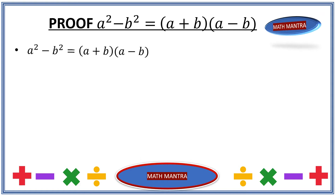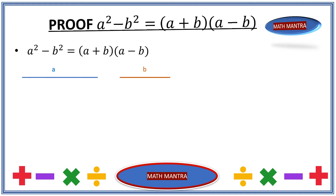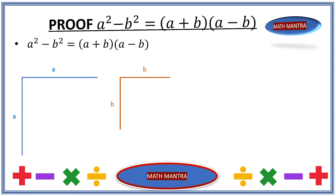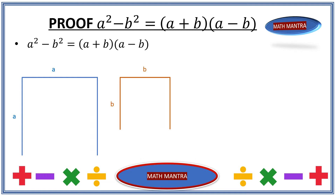In order to prove a squared minus b squared equals a plus b times a minus b, let's draw a line segment and call it a, and draw another line segment and call it b. Now let's copy these line segments, rotate them 90 degrees, and place them aligning the top-left corner. After copying the line segments on the left and aligning vertically, let's name them a and b, then copy them to the right and down as well.